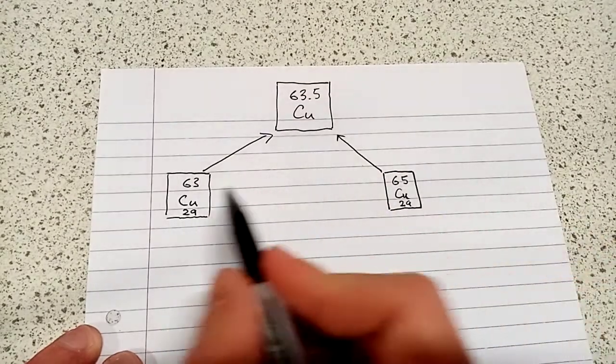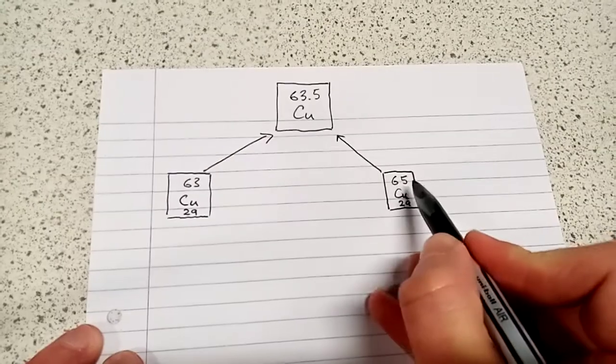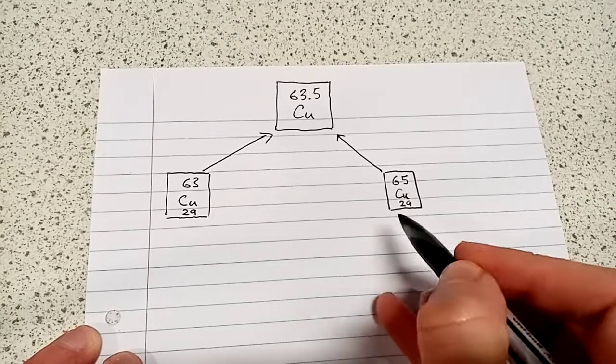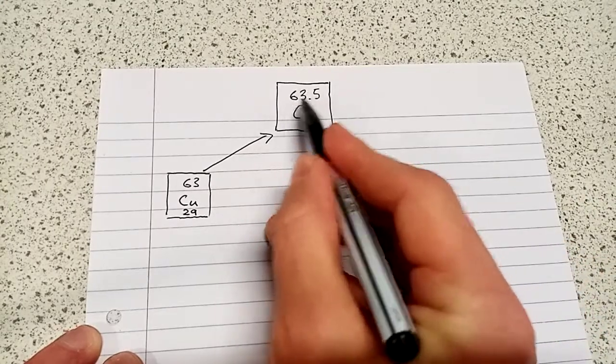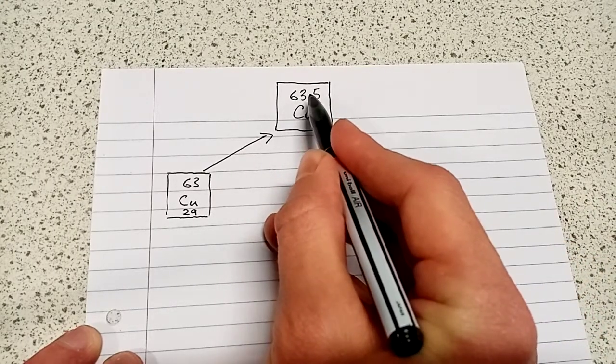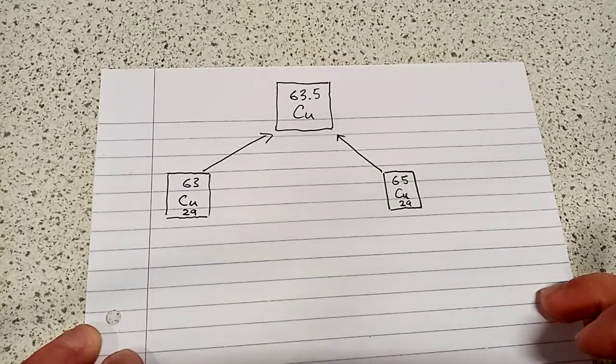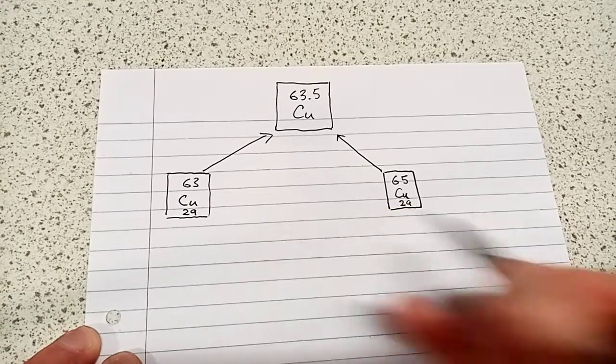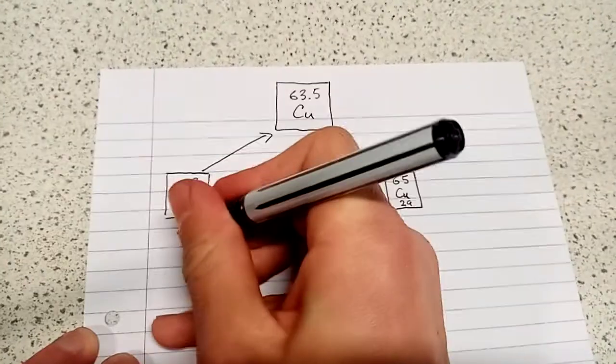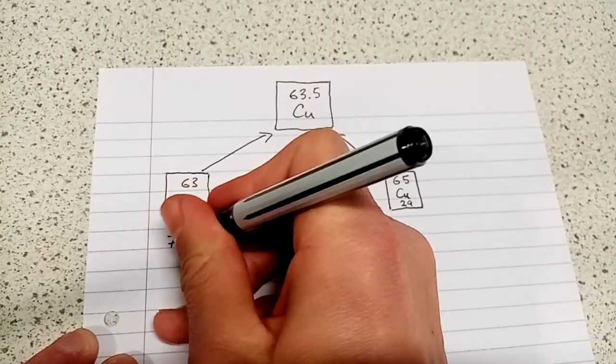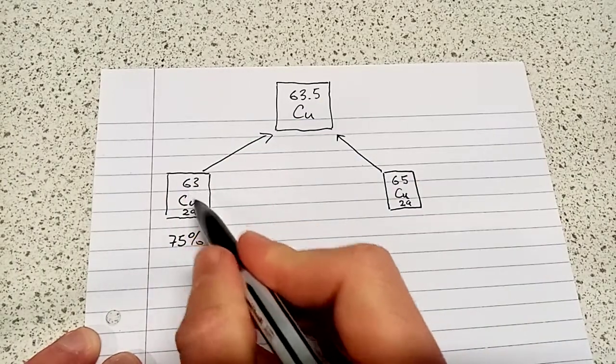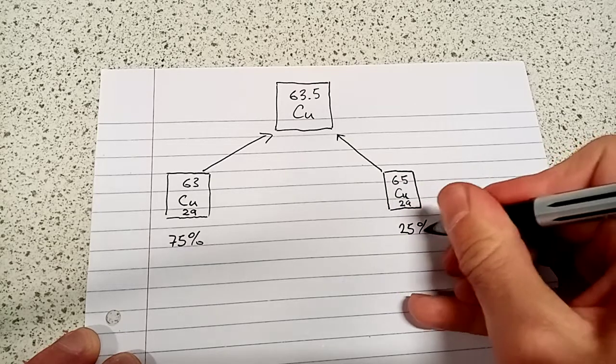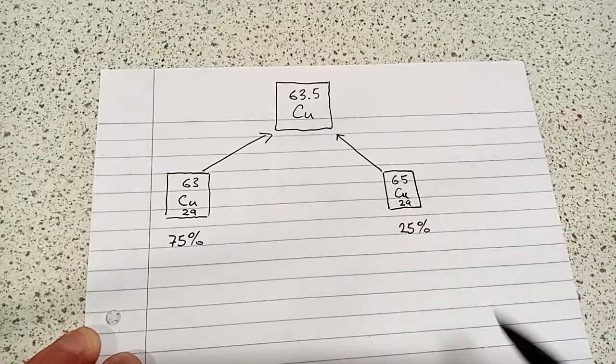So why is it then that we have 63 and 65? Surely if you had half and half, 50% of each of these, you'd come out with a relative atomic mass of 64. Well this is actually to do with the fact that we don't have half and half of these two isotopes. What we have instead is approximately 75% of the copper 63 isotope and approximately 25% of the copper 65 isotope.